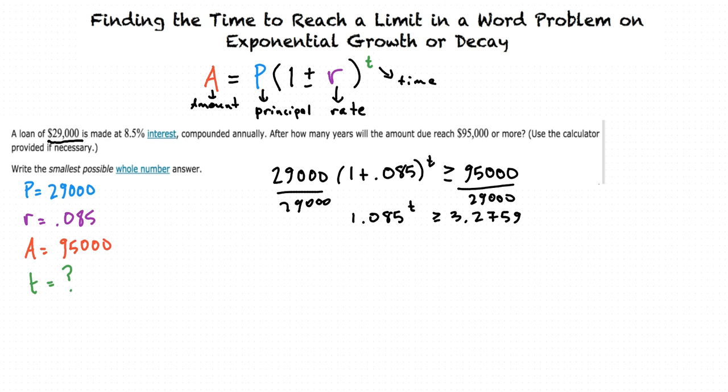You're right. When we do that, we get T times natural log of 1.085, because we multiply this by the natural log, the T comes down. It's greater than or equal to natural log of 3.2759. Then we can divide both sides by natural log of 1.085 to get T alone on the left side.